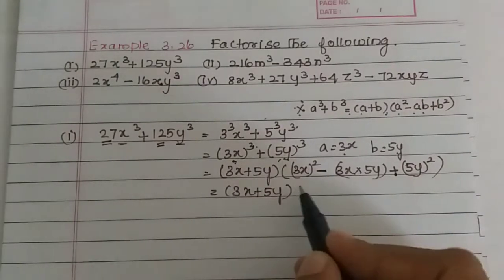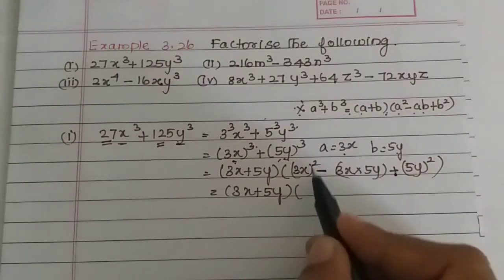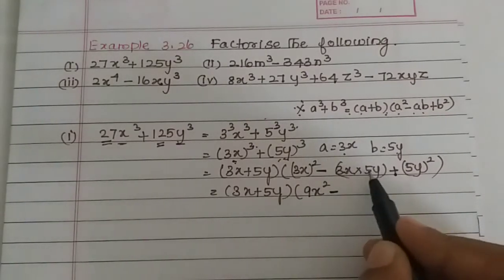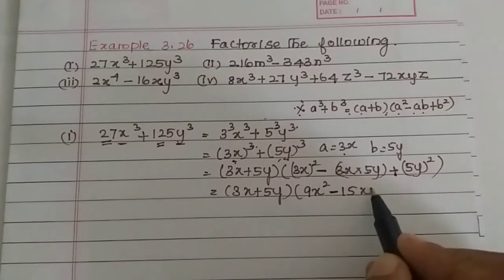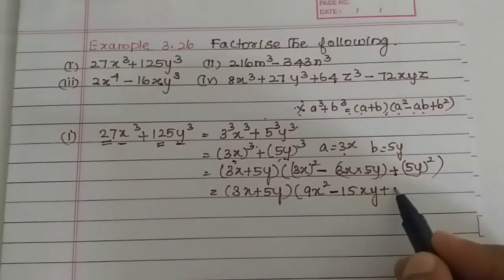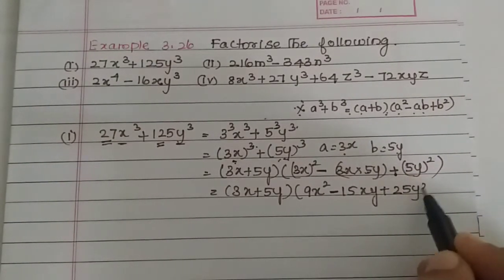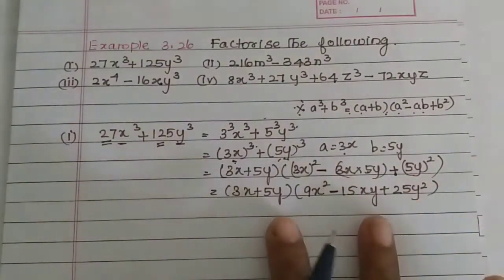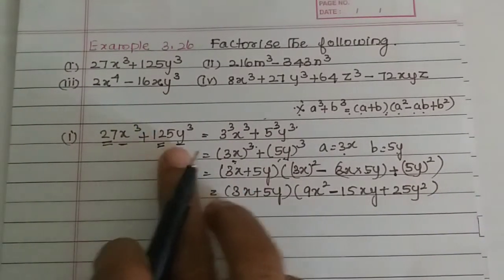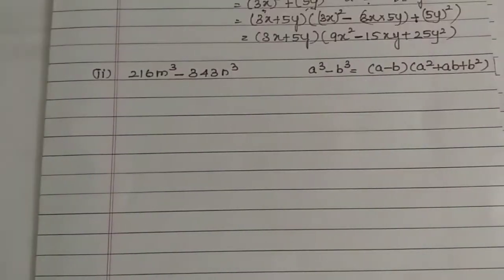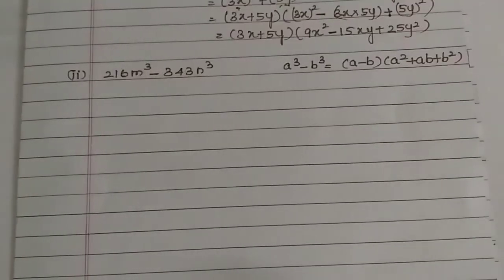So we get (3x + 5y) into: 3² is 9, so 9x², minus 3×5 is 15xy, plus 5² is 25, so 25y². These are the factors of 27x³ + 125y³.